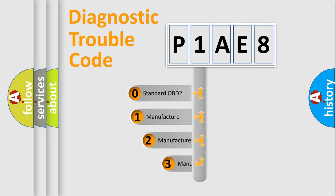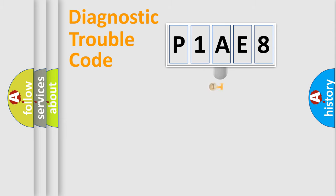If the second character is expressed as zero, it is a standardized error. In the case of numbers 1, 2, 3, it is a manufacturer-specific error.